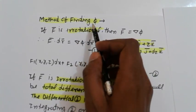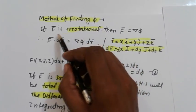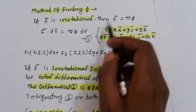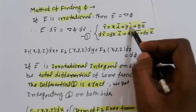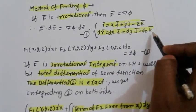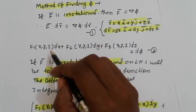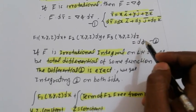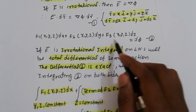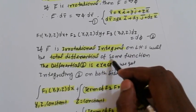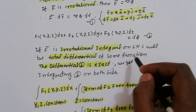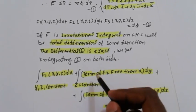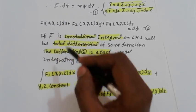Method of finding scalar potential function: when F is irrotational, F equals nabla·phi. Taking the dot product with dr, where r = x·i + y·j + z·k and dr = dx·i + dy·j + dz·k, we get F1 dx + F2 dy + F3 dz = d(phi). Since F is irrotational, the left-hand side is the total differential of some function, which means it is exact.